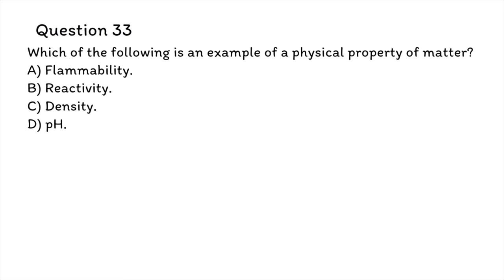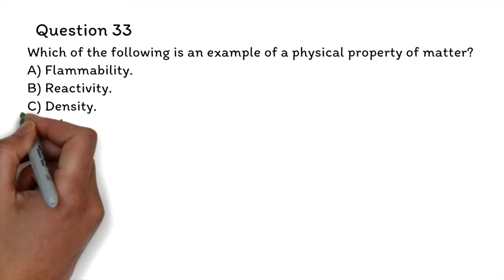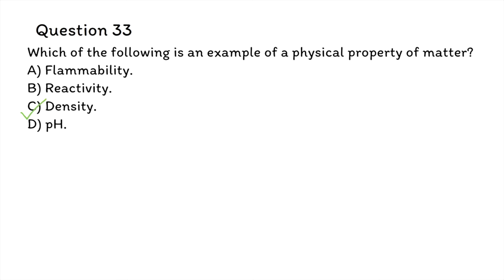Question 33: Which of the following is an example of a physical property of matter? A. Flammability, B. Reactivity, C. Density, D. pH. The correct answer is C, Density. Physical properties of matter are characteristics that can be observed or measured without changing the composition of the substance. Examples of physical properties include density, color, texture, and melting point. Flammability, reactivity, and pH are examples of chemical properties, which describe how a substance interacts with other substances to form new substances.